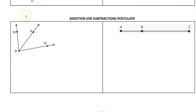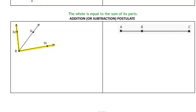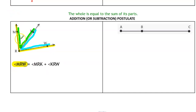Moving on to the actual addition postulate — the whole idea is: the whole is equal to the sum of its parts. Looking at angle MRW, that's the large angle. You can see it is made up of two smaller angles: MRK and KRW. It should make sense that the measure of MRK plus the measure of KRW equals the measure of MRW — the entire thing. In other words, the sum of the two parts equals the whole. The large angle MRW in yellow equals the sum of its parts — MRK in green and KRW in blue.